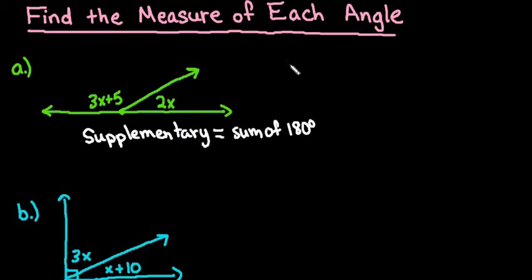So we can say that the first angle, which has a measure of 3x plus 5, plus the second angle, which has a measure of 2x, this is going to equal 180 degrees, and we're going to find our answer to this one in degrees.